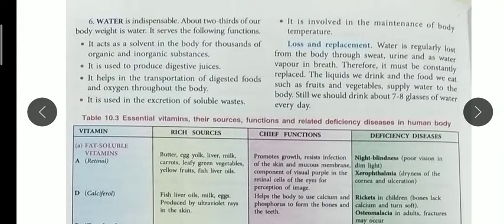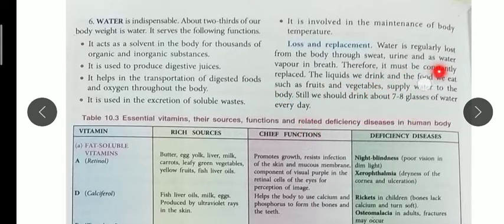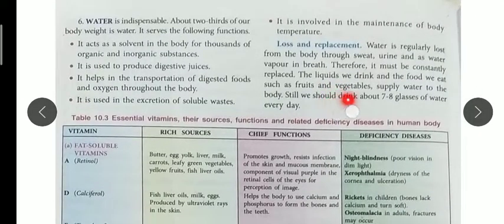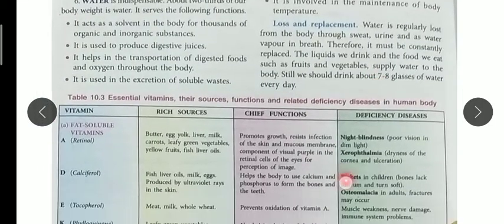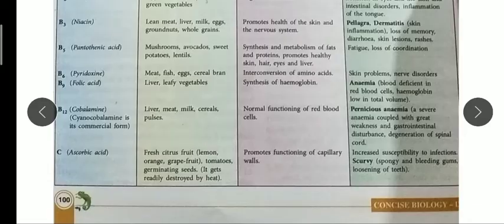Water is involved in the maintenance of body temperature, acting as a regulatory mechanism. It leaves the body in the form of urine and water vapor in our breath, so it must be constantly replaced. We should eat sufficient fruits and vegetables and drink enough water to keep the water content constant in our body — about seven to eight glasses of water every day is recommended.